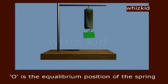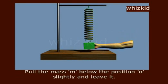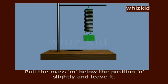O is the equilibrium position of the spring. Pull the mass M below the position O slightly and leave it.